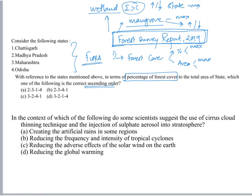The next question is regarding the cirrus cloud thinning technique and sulfate injection of sulfate aerosols — this was regarding global warming. That means this question is related to climate change and related research and development ongoing.